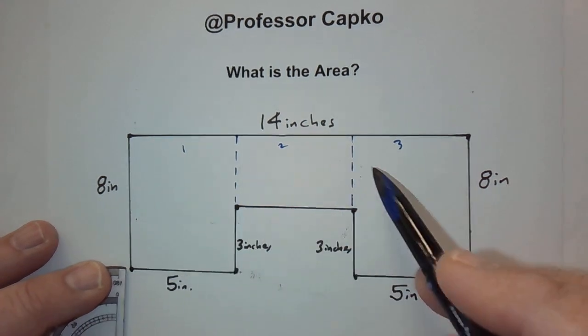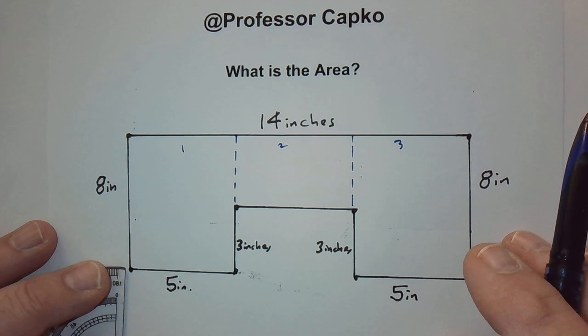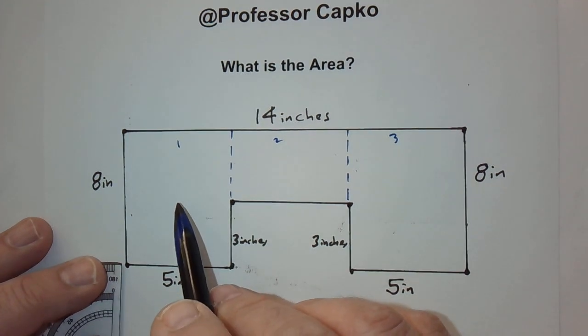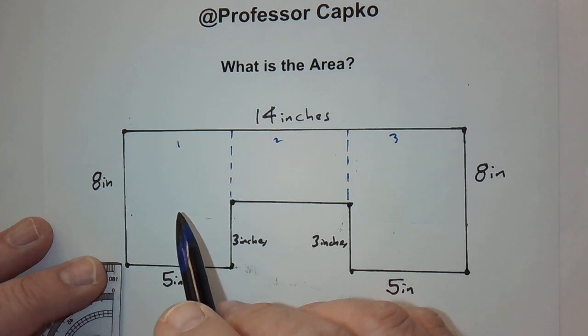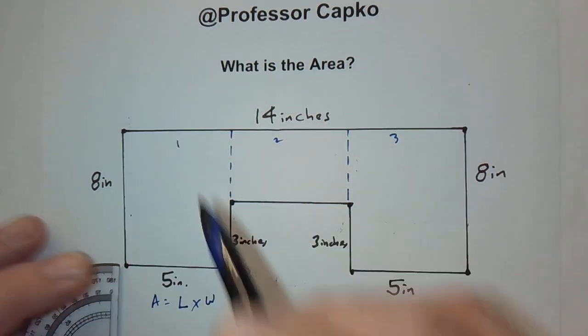And then once we find the area of each one, we're going to add them up to get the total area. So, we'll start with this one on the left. And we know that the formula for the area of a rectangle is the length times the width. So, we've got the width here of five, and we have the length of eight.